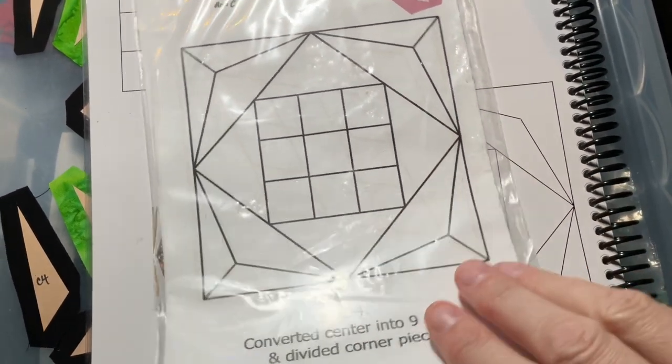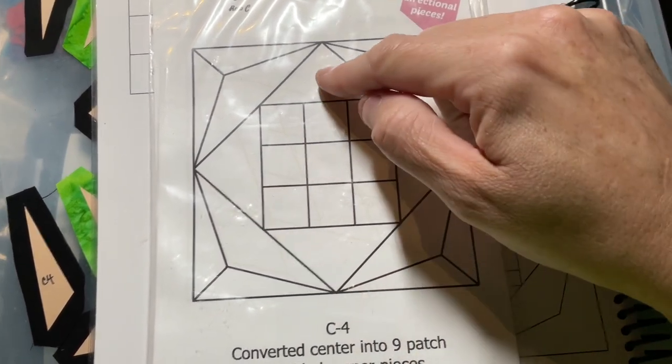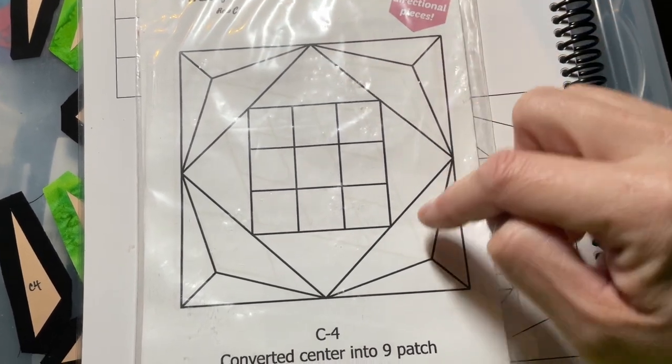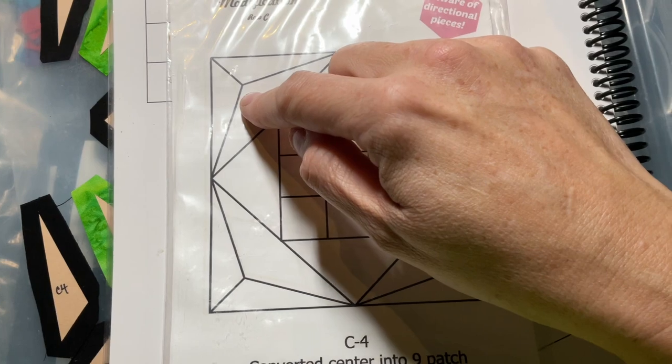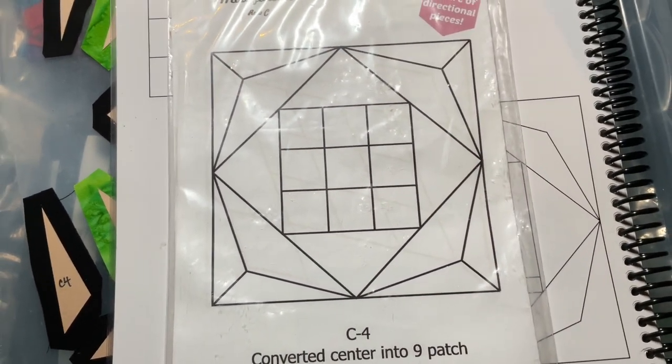Assembly is going to be just that: we've got the nine-patch, and then we're going to add the triangles. I'm not sure if I'm going to add these then these, or if I'm going to make these into a corner and then add it, but we'll see how that goes once we get there.